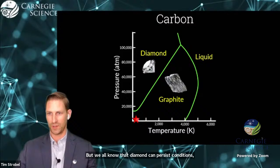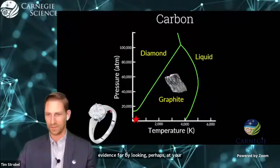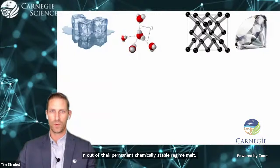But we all know that diamond can persist at conditions found at atmospheric pressure and room temperature. Therefore, diamond is probably one of the best known examples of a metastable material. So why is this? Why is it that ice cubes when taken out of their thermodynamically stable regime melt, but diamond can persist?